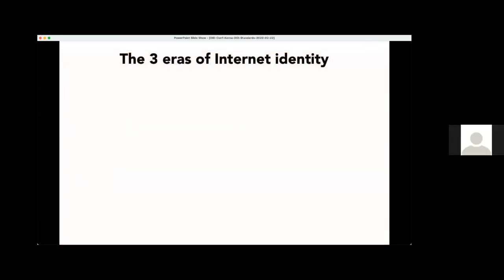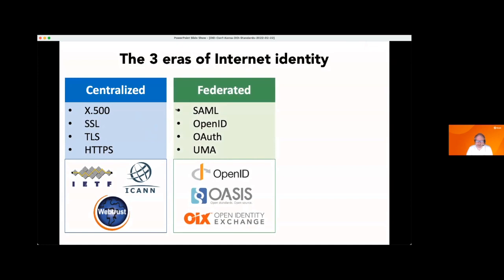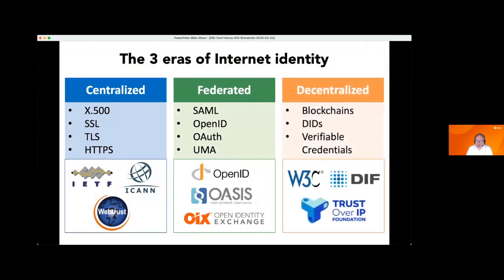Let's start with DID architecture and how it is about more than just wallets and credentials. I usually start by explaining there have been three overall eras of internet identity: the centralized era, where the key problem was how to have an encrypted connection over the internet so you could safely use usernames and passwords; then the federated identity era, where you could reuse a username and password for one site to log into multiple sites; and now, for about five or six years, the third era of decentralized identity — inspired by blockchain but not exclusively using it — with the two core standards of DIDs and verifiable credentials.